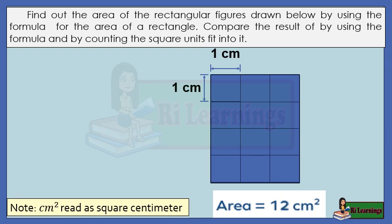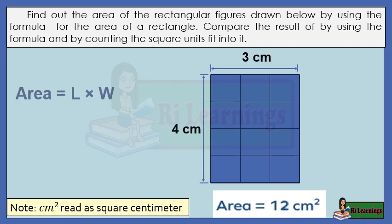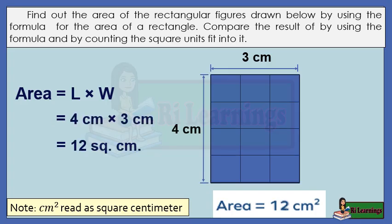Find out the area of the next rectangular figure using the formula and compare the result with counting the square units. Since the length of the rectangle has 4 units of 1 centimeter squares, the length equals 4 centimeters. The width has 3 units, so the width equals 3 centimeters. Using the formula: area equals length times width — 4 centimeters times 3 centimeters equals 12 square centimeters.